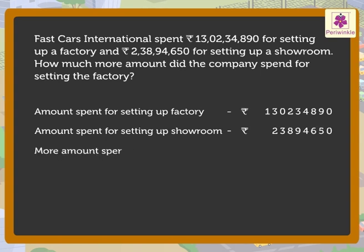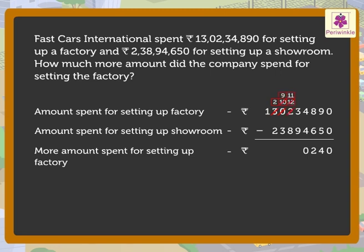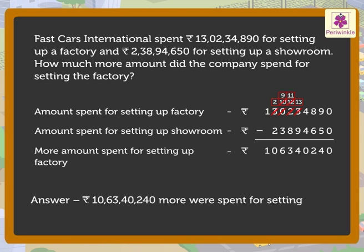Now let us subtract these numbers to get the difference. Thus ten crore sixty three lakh forty thousand two hundred forty more rupees were spent for setting up the factory by the company.